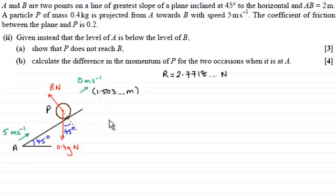You can see what I've got here is just basically the situation as we see it now. Remember in the previous part we showed that the particle P moved up the plane a distance of 1.503 meters when it came to instantaneous rest. Now what I've done then is just given you the basics of the diagram at this stage.